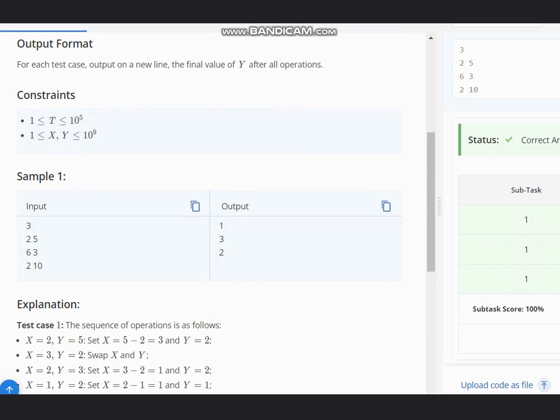Now let's see for 2, 10. X is 2, Y is 10. Is X greater than Y? No, it is not. So we have 8, which is Y minus X. Again, X is greater, so we swap.